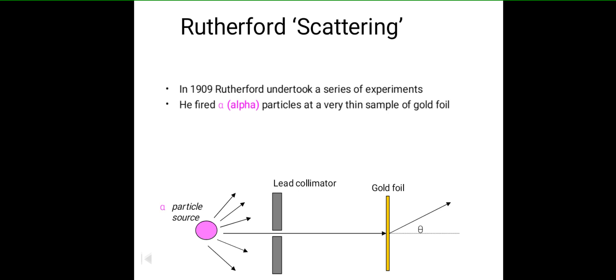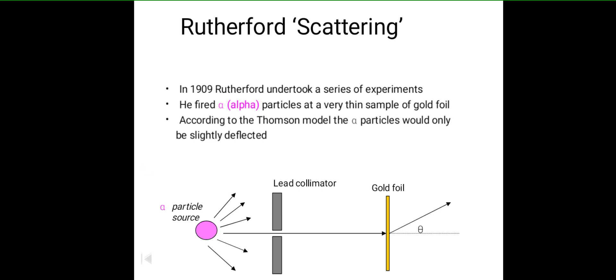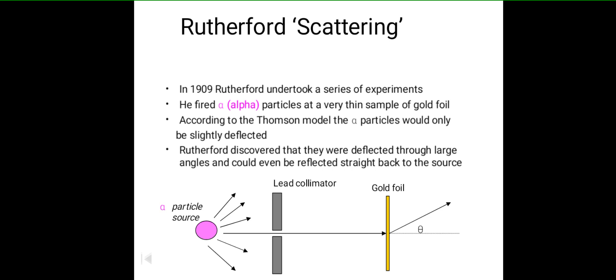It was a very thin gold foil. Rutherford expected that alpha particles would pass through the foil straight. He thought they would pass straight through with very little or no deflection. But what he observed was the opposite: alpha particles were deflected through large angles and could even be reflected straight back to the source. Some alpha particles bounced back completely towards the source.